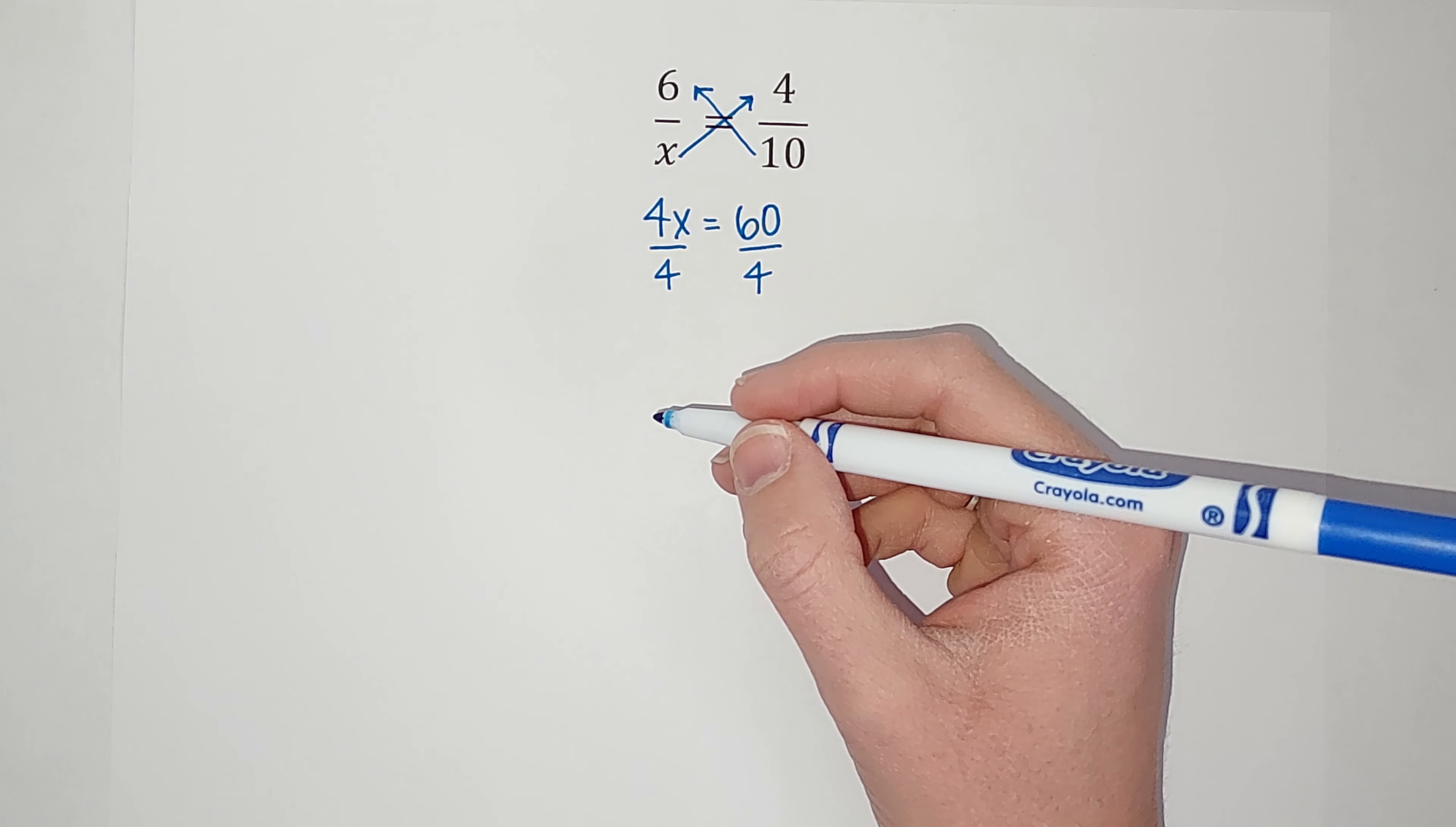And as always, there's usually a way to check yourself in math. So what we are saying with this answer is we are saying that 6 over 15 is equal to 4 over 10.